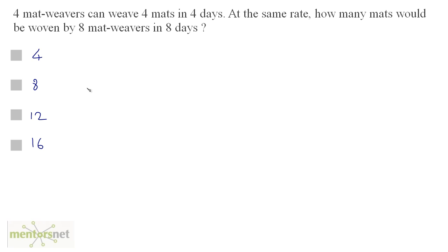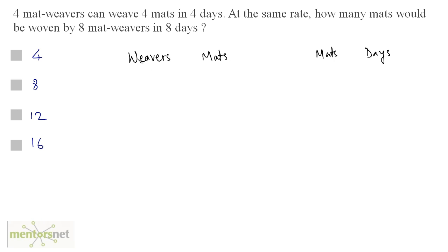4 mat weavers can weave 4 mats in 4 days. At the same rate, how many mats would be woven by 8 mat weavers in 8 days? We have 3 quantities: weavers, mats, and days. The number of weavers, if they increase, will increase the number of mats produced. So weavers is directly proportional to mats.